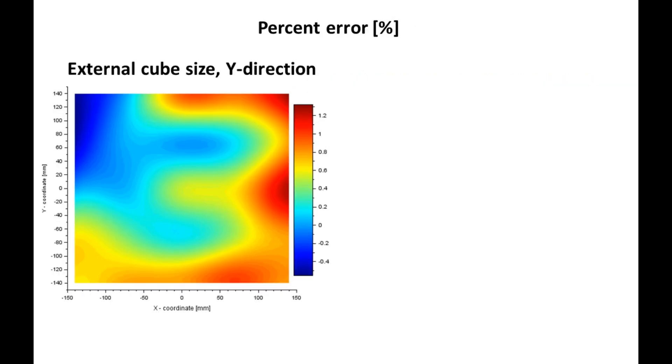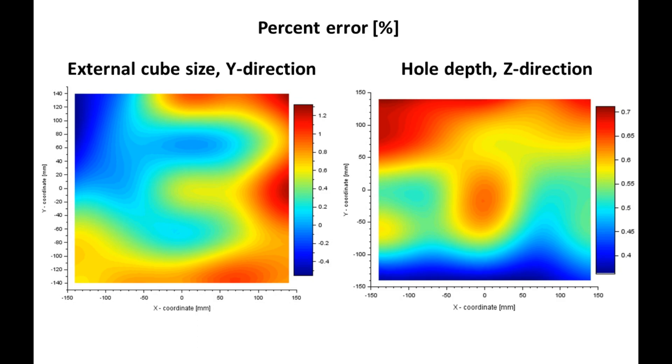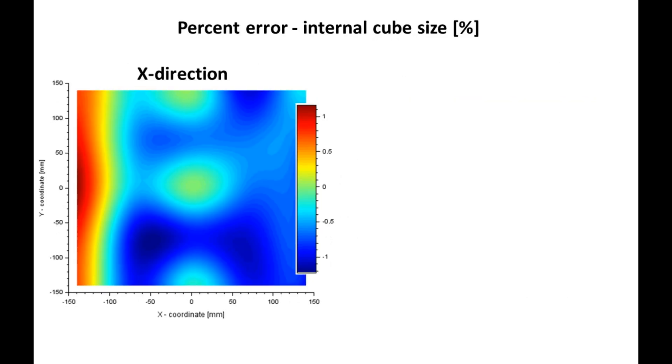Here we go with other results. Percent error for external cube size in Y direction on the left side. On the right side is percent error of the hole depth dimension. Hole is then deeper with respect to nominal value. Here we have percent error for cube inner hole dimensions in X and Y direction.